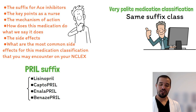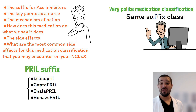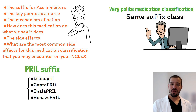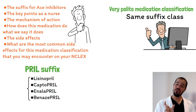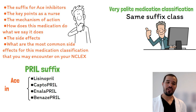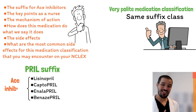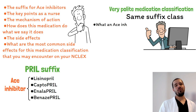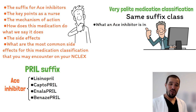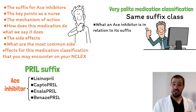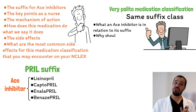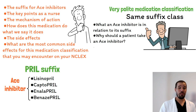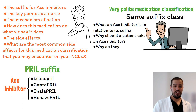When you see PRIL, make the identification that this is an ACE inhibitor. Now that we can identify what an ACE inhibitor is in relation to its suffix, why should a patient take an ACE inhibitor, and why do they?